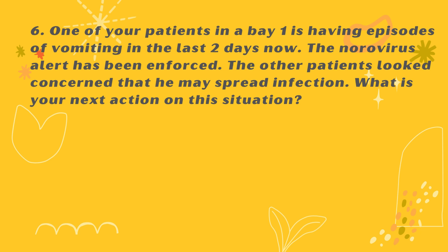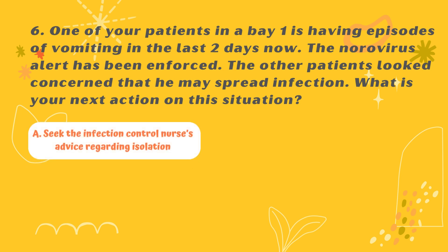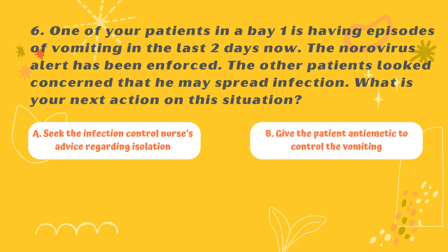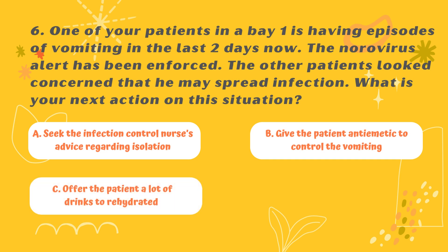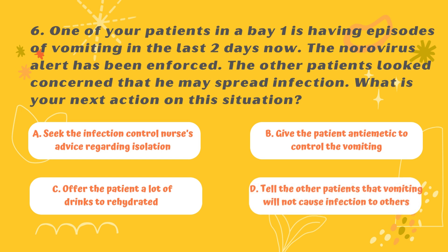Question 6: The other patients look concerned that a patient may spread infection. What is your next action? Option A: Seek the infection control nurse's advice regarding isolation. Option B: Give the patient an anti-emetic to control the vomiting. Option C: Offer the patient plenty of drinks to rehydrate. Option D: Tell the other patients that vomiting will not cause infection to others. The correct answer is A.